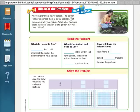So we're going to go ahead and start here with the Unlock the Problem. It says Anaya is planting a flower garden. The garden will have no more than 12 sections. 3 fourths of the garden will have daisies. What other fractions could represent the part of the garden that has daisies? So in other words, they're asking us to write equivalent fractions for 3 fourths.